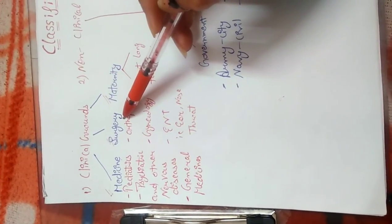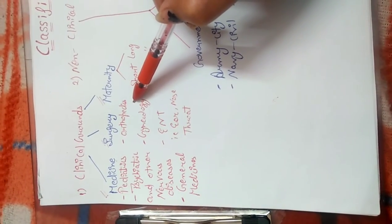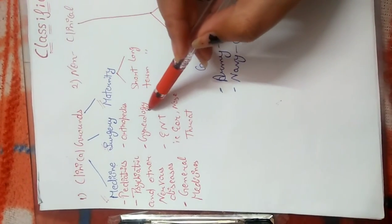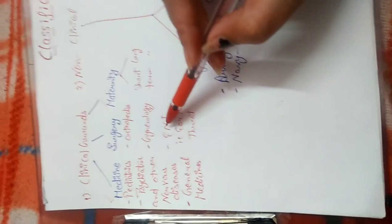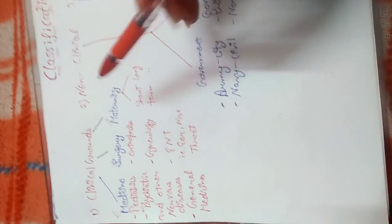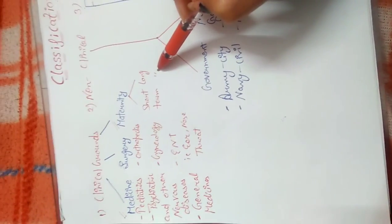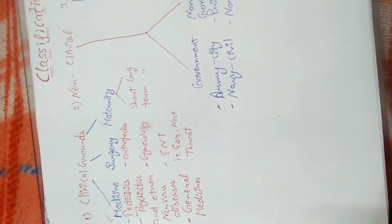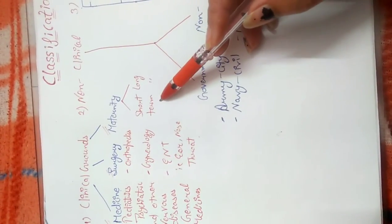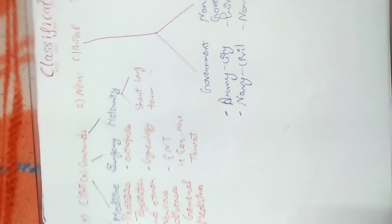On the basis of surgery, we have orthopedic hospitals for joints, gynecology for women, and ENT hospitals for ear, nose, and throat. Third is maternity — obviously for pregnant women, divided into short-term and long-term. Short means for a short duration of time, and long means for a longer period.